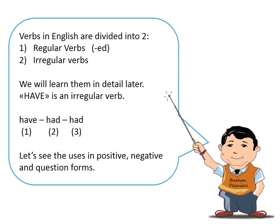Verbs in English are divided into two: regular verbs and irregular verbs. We will learn them in detail later. Let's see the uses in positive, negative, and question forms.